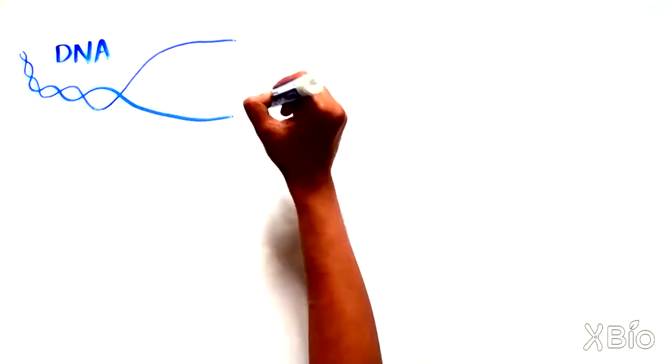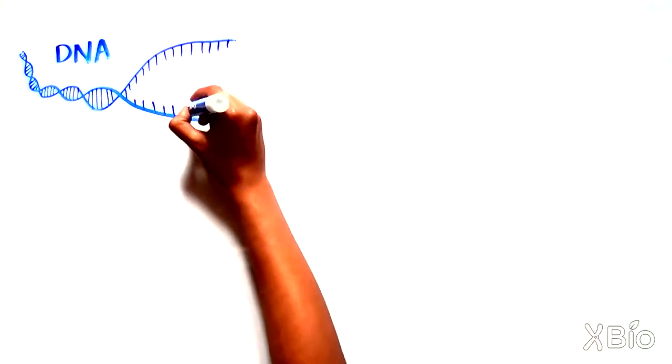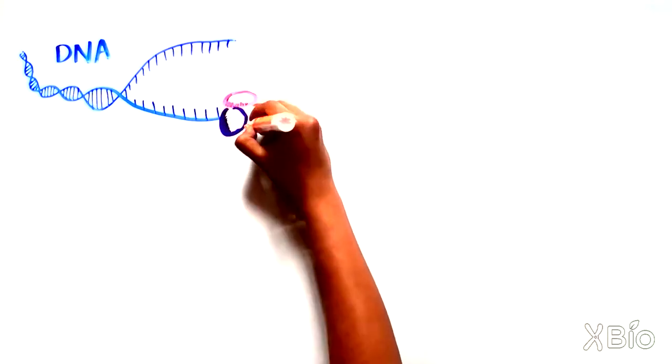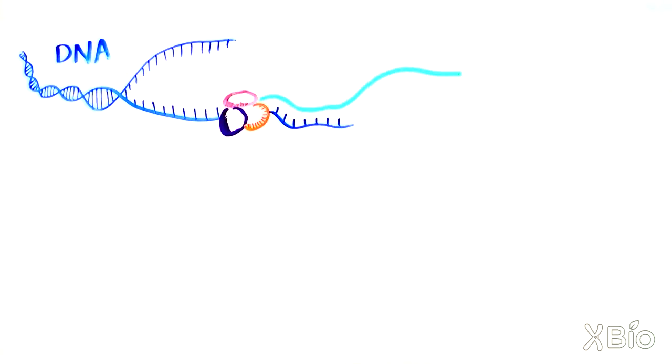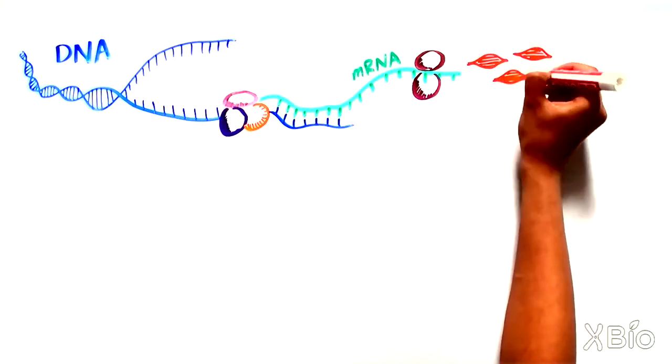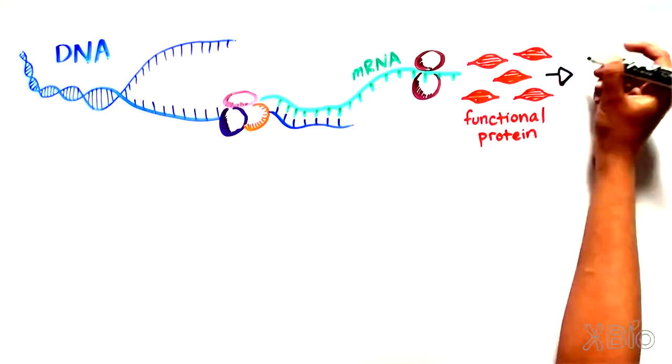First, DNA, which is made up of two complementary strands, is unzipped and a complex of proteins turns one of these strands into a single strand of RNA, known as messenger RNA or mRNA. This mRNA is then read by a different complex of proteins, resulting in the assembly of a functional protein.